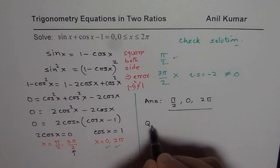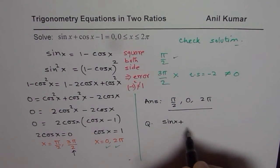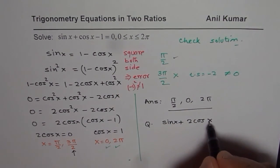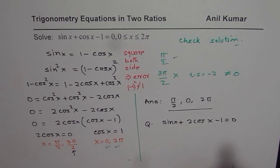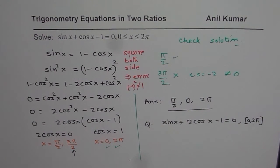Now I would like you to solve one similar question. So question for you to practice is, sin x plus 2 cos x minus 1 equals to 0. So solve this in the same domain, 0 to 2 pi. Remember, you need to check the solution before writing the final answer. I hope that helps. Thank you.